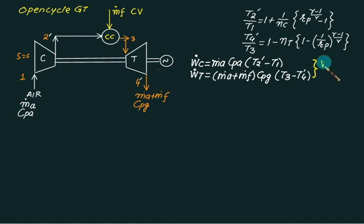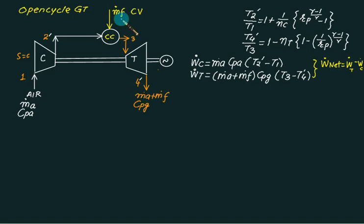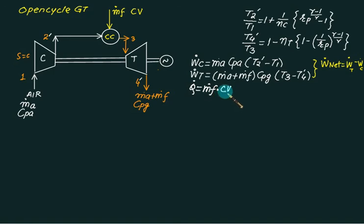Net power developed is W-dot-t minus W-dot-c. If the mass flow rate of fuel and its calorific value are known, the rate of heat supplied is Q-dot equals m-dot-f multiplied by CV, with units of kilowatts (kg/s × kJ/kg). Thermal efficiency is then W-dot-net divided by Q-dot-supplied.